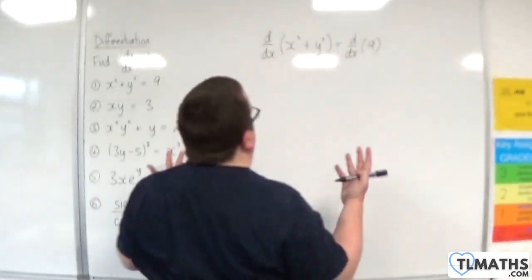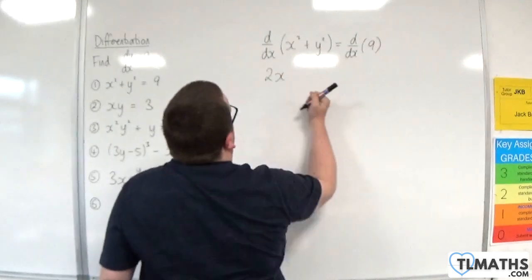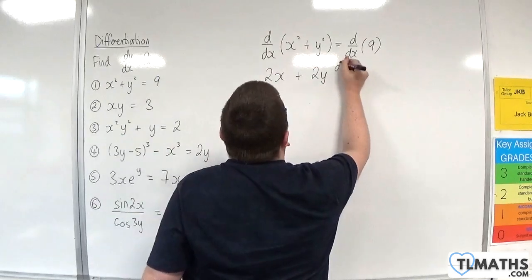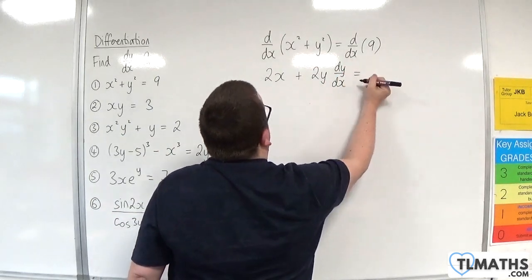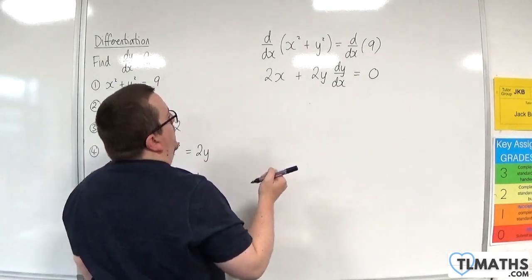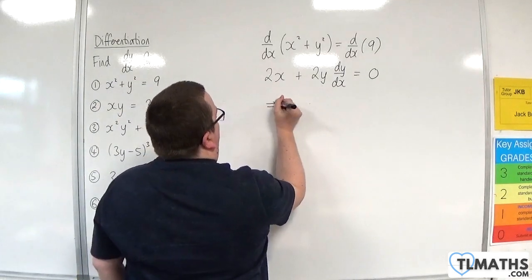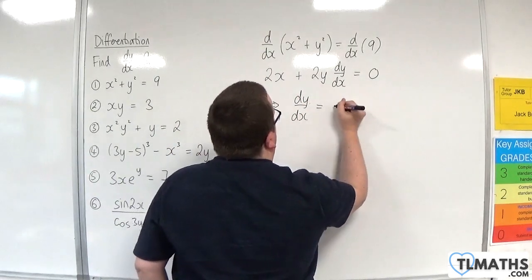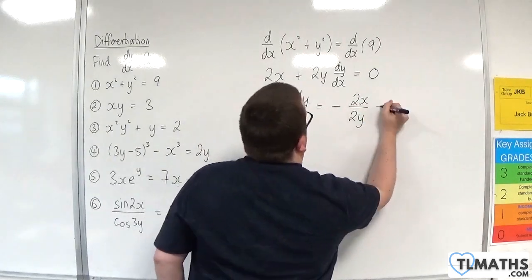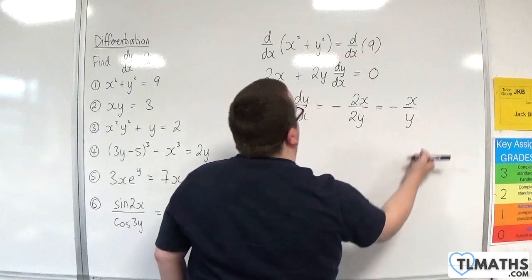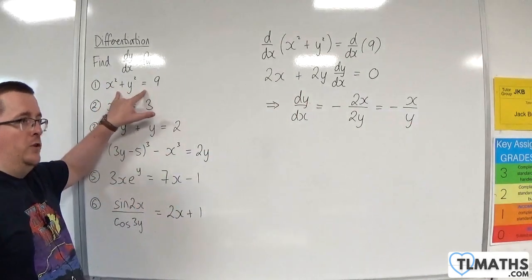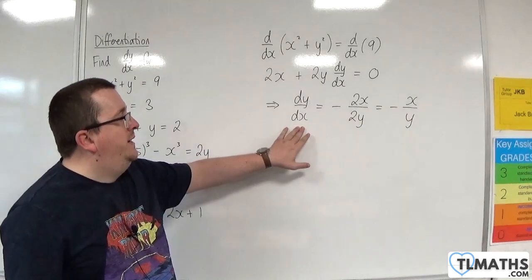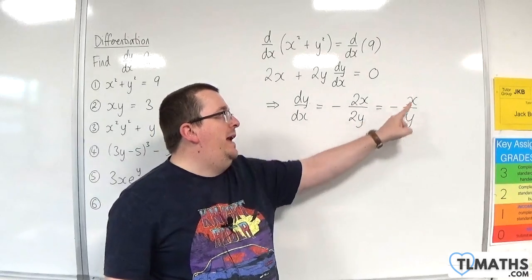We differentiate x squared with respect to x, which is just 2x. y squared differentiates to 2y, and because it has y involved, we stick a dy by dx on the end. The right-hand side differentiates to 0. Subtracting 2x from both sides and dividing by 2y gives minus 2x over 2y, which is minus x over y. This is the equation of a circle centred at the origin with radius 3, so the gradient at any point on the circle is minus x over y.